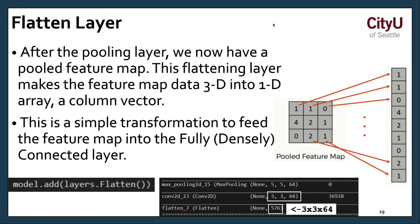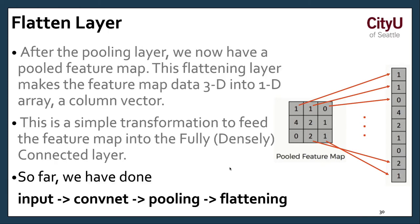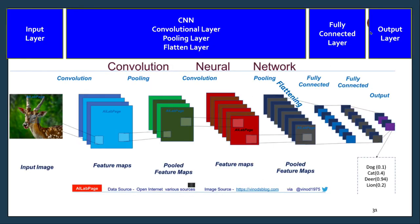The flatten layer. After the pooling layer, we now have to flatten layer, makes the feature map 3D into a 1D array. Because 3D is very spatial in nature. We have to know the depth and the X, Y, Z axis basically. And for data points, we have to have a flat data point. So that's why we convert that to a 1D array. It's a simple transformation to feed the feature map into a fully densely connected layer. Input, the convolution net, the pooling and the flatting. And then the fully connected layer. And then output layer.